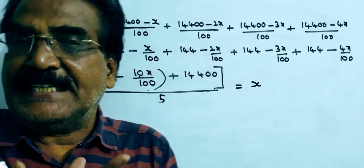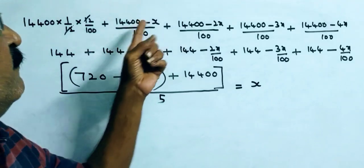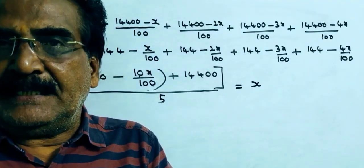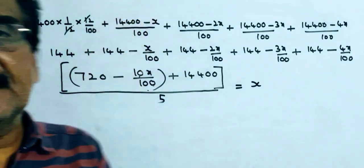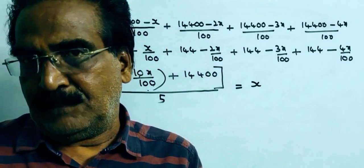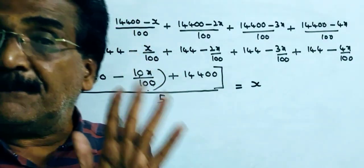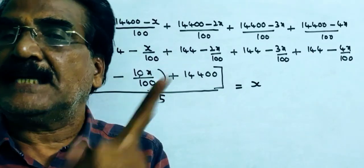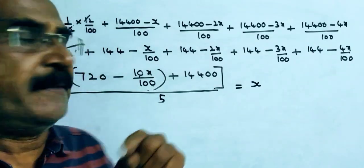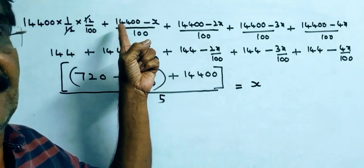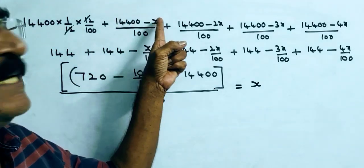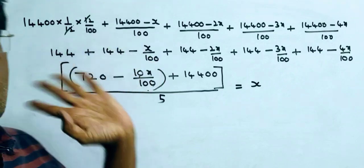The interest for the second month: the principal for the second month is 14,400 minus x, because in one month he pays x rupees as the first installment. So the principal for the second installment is 14,400 minus x, divided by 100. This is the interest for the second month.